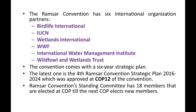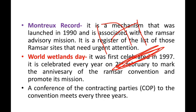The convention comes with a 6-year strategic plan, and meetings are held every 3 years. The 171 parties and nations implement the plan with management rules and regulations. The latest is the 4th Ramsar Convention Strategic Plan covering 2016 to 2024, which is currently being implemented. This plan was approved at COP12 of the convention.